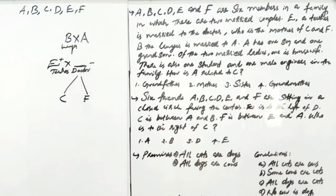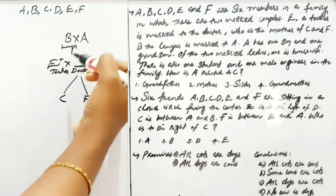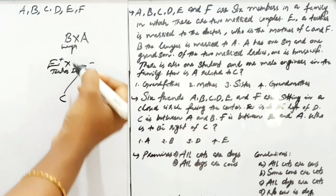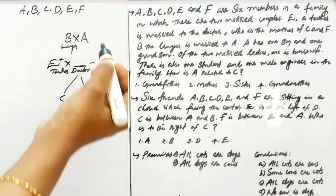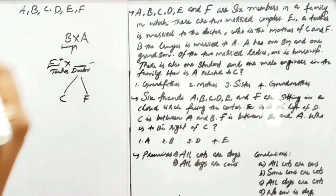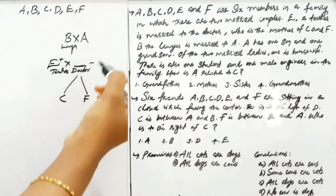B, the lawyer, is married to A. A has one son and one grandson. Of the two married ladies, one is a housewife. One of the married ladies is a doctor, so the other married lady is a housewife. In these couples, one is male and one is female.